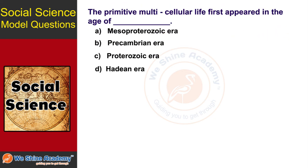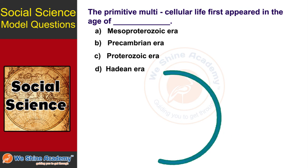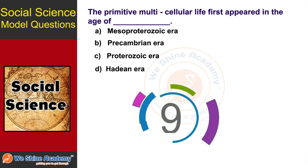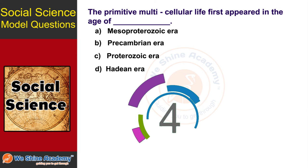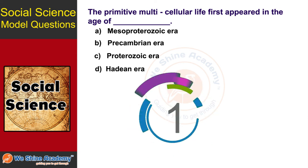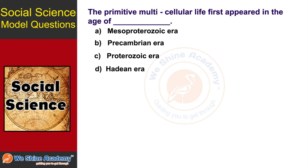The next question is: primitive multicellular life first appeared in the age of what? You have 10 seconds to find out. The answer is Option C, Proterozoic era — that is when primitive multicellular life first appeared.